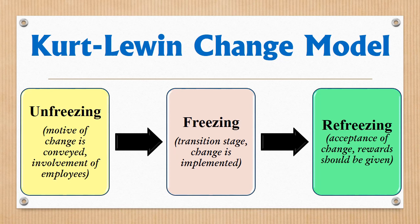The second stage is the actual implementation stage at which the transition occurs. It involves the acceptance of new ways of doing things, and the actual change is implemented at this stage. Since the transition is not easy, management should motivate and communicate to employees about the benefits of adopting the change.